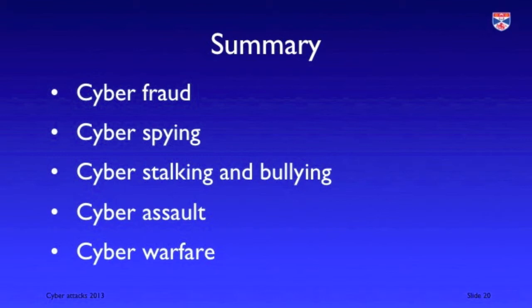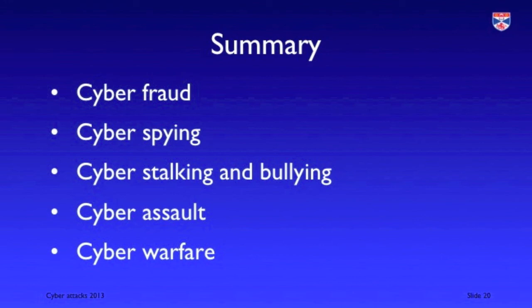In summary, there are five kinds of cyber attack. Cyber fraud, with the aim of getting money. Cyber spying, with the aim of collecting information but not necessarily damaging or destroying it. Cyber bullying or cyber stalking, whose aim is to cause psychological damage to an individual. Cyber assault, whose aim is to cause physical damage either to hardware, data, or programs in the system. And cyber warfare, which is where a nation state attempts some kind of cyber assault against another state.